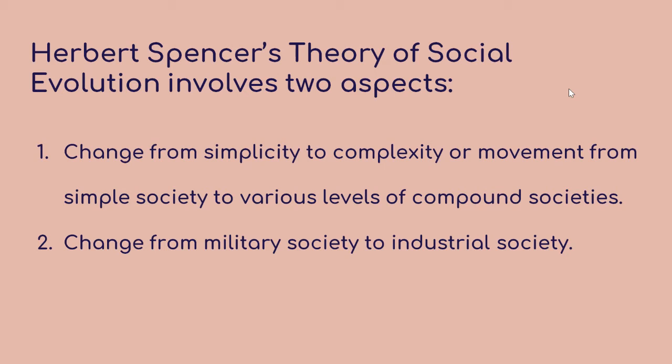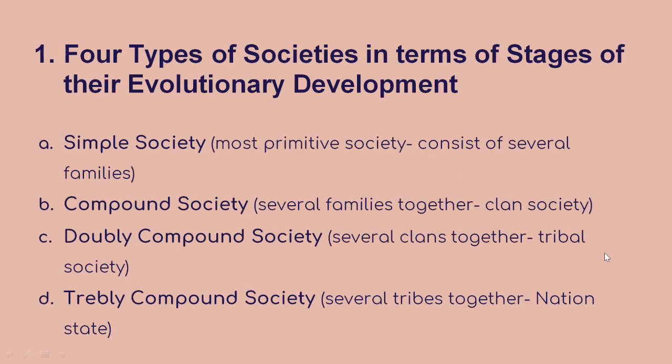This theory of social evolution involves two aspects. The first aspect is the change from simplicity to complexity, or movement from simple society to various levels of compound society. The second aspect is the change from military society to industrial society. We will discuss these two aspects one by one.